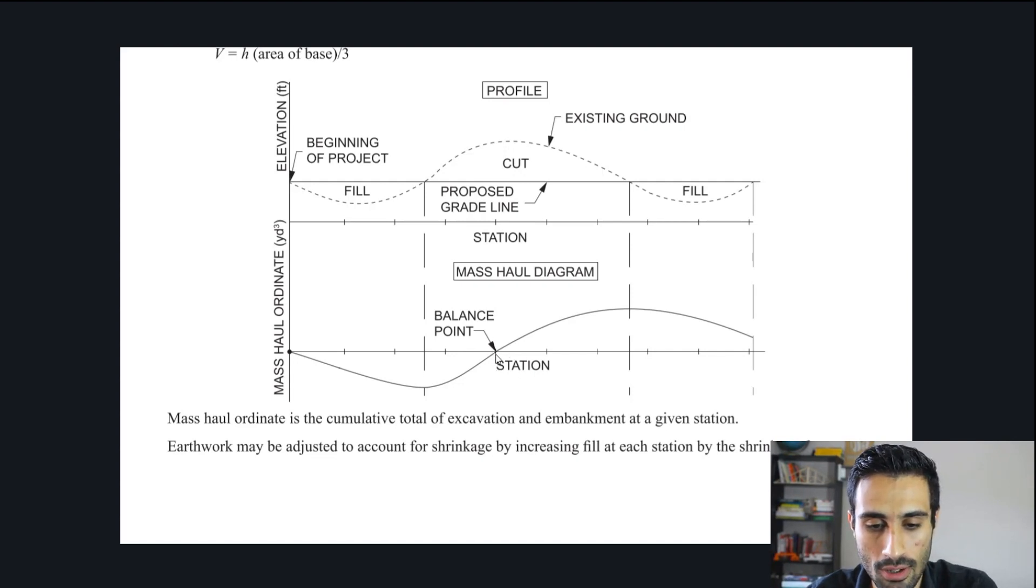This will be positive. This will be negative. It defines also the mass haul diagram. It will be the cumulative or the net total of excavation and embankment at a given station. It's important because it's excavation. Think of that as the cut and embankment as the fill. It's the net volume of both of those.